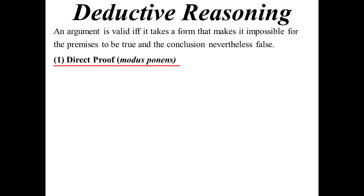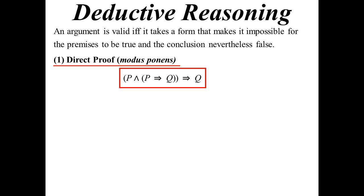Direct proof, known in Latin as modus ponens, uses our symbolic notation. What we're saying is: if we prove that P implies Q — so we've proven that to be true — and we also have P, then we must have Q. We're saying if we can prove P implies Q and we've got P, then we can conclude we've got Q. That's the idea of a direct proof using the logic notation.